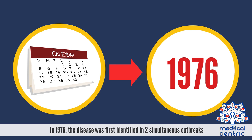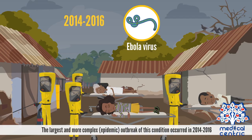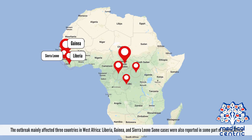In 1976, the disease was first identified in two simultaneous outbreaks — one in Inzara, a town in South Sudan, and the other in Yambuku, Democratic Republic of Congo, a village near the Ebola River, from which the name of the disease was coined. The largest and most complex epidemic outbreak occurred in 2014–2016 in West Africa, with 28,616 cases and 11,310 deaths. The outbreak mainly affected Liberia, Guinea, and Sierra Leone, with some cases also reported in parts of Central Africa.